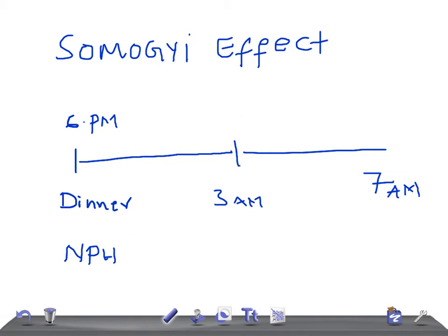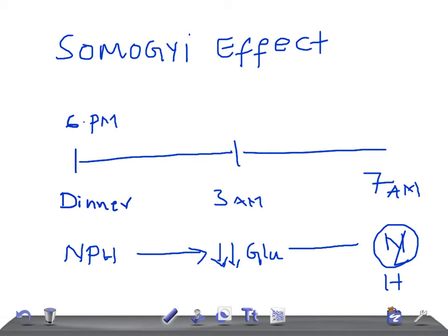In the Somogyi effect, there is too much NPH — the patient has taken more NPH insulin. What happens is that the glucose level at around 3 a.m. will be low. So the patient undergoes hypoglycemia at 3 a.m., and now the body has to do something to increase the blood glucose because that is really very important. So it releases stress hormones, and at around 7 a.m. the reaction to the low glucose takes place, resulting in high glucose levels.